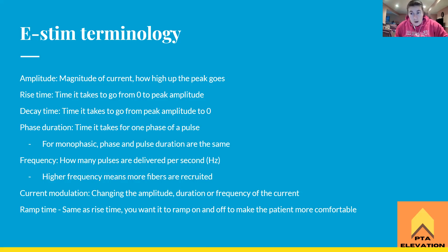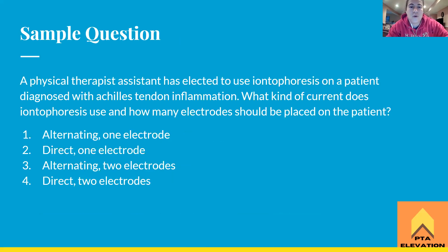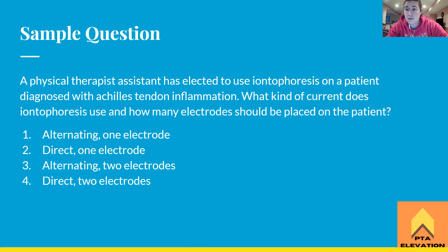Sample question: A physical therapist assistant has elected to use iontophoresis on a patient diagnosed with Achilles tendon inflammation. What kind of current does iontophoresis use and how many electrodes should be placed? Options: (1) alternating, one electrode; (2) direct, one electrode; (3) alternating, two electrodes; or (4) direct, two electrodes.